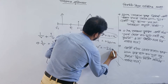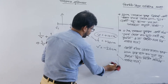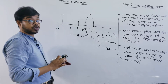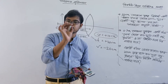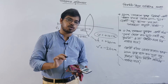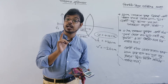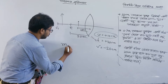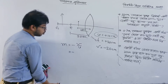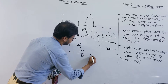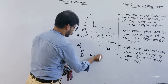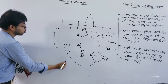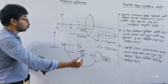So the image position is minus 20 cm. That means m equals minus v by u, which is minus (minus 20) divided by 10, giving m equals plus 2. Magnification is plus 2, which means the image is virtual and magnified — a virtual, erect, and enlarged image is formed.